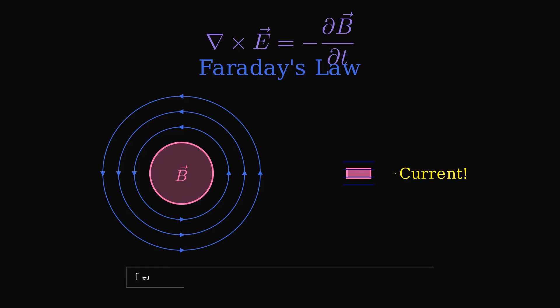Notice the negative sign in the equation. This represents Lenz's law. Nature opposes change. The electric field always tries to counteract the changing magnetic field that created it.